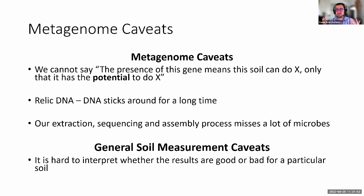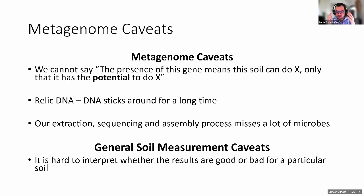Anyone who has measured soil samples knows it's really hard to interpret whether results are good or bad for a particular soil. If you have ever sampled a California soil and tried to do soil health measurements using a scale made in the Midwest, you'll see all the California soils rate way at the bottom. We just don't have the same conditions — that doesn't mean the soils are bad. The San Joaquin Valley is one of the most productive agricultural regions in the world. It just means every soil is different, every soil metagenome is different, every soil has a different mix of organisms.